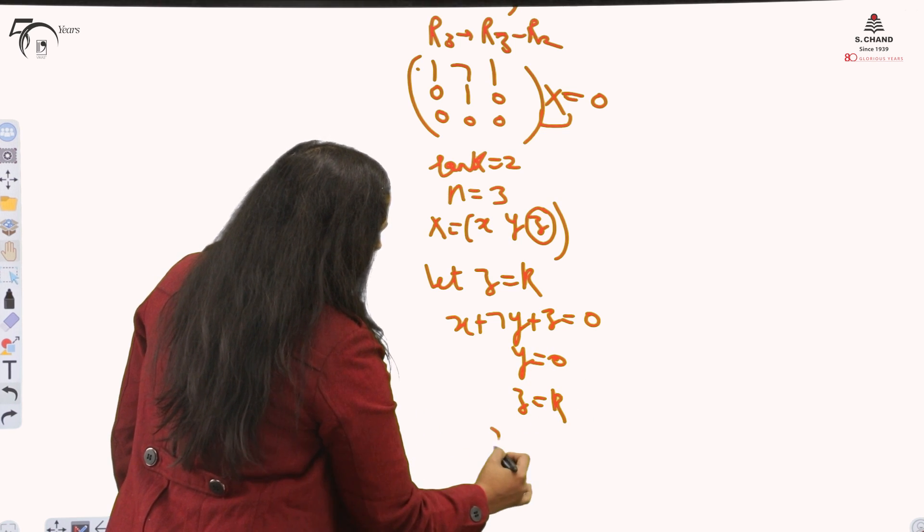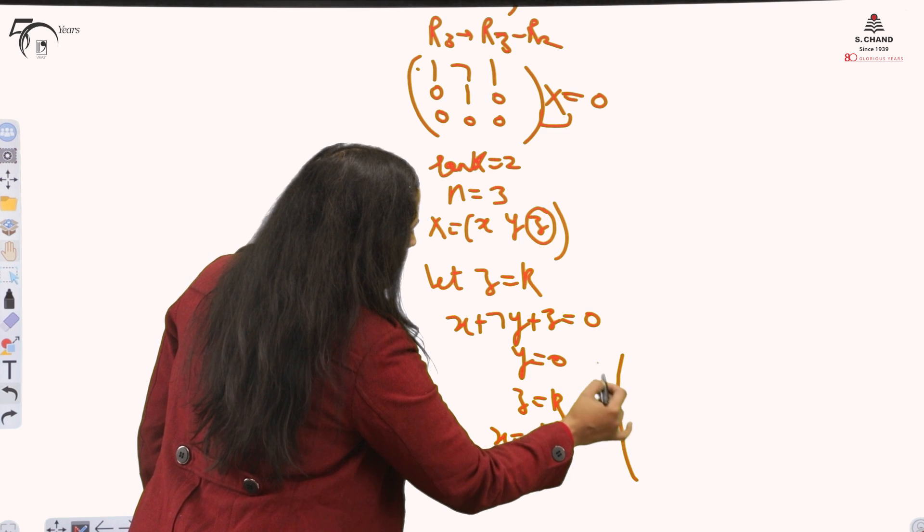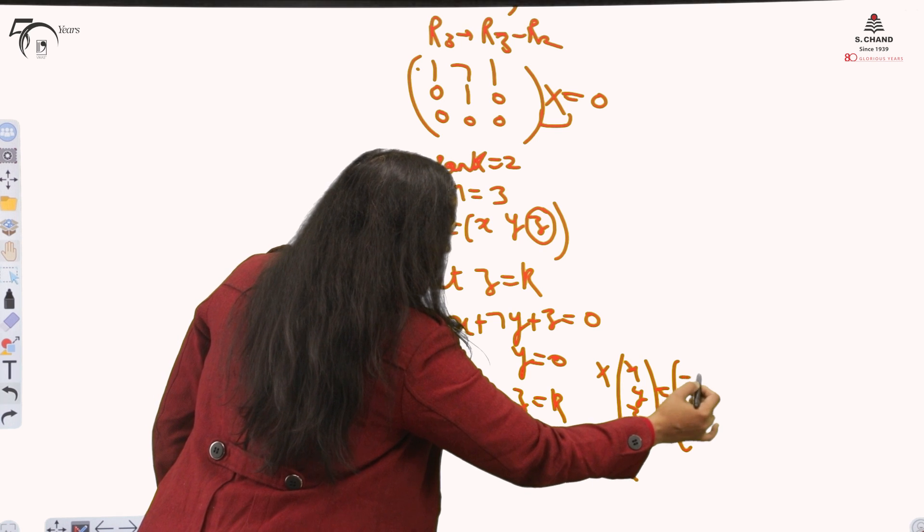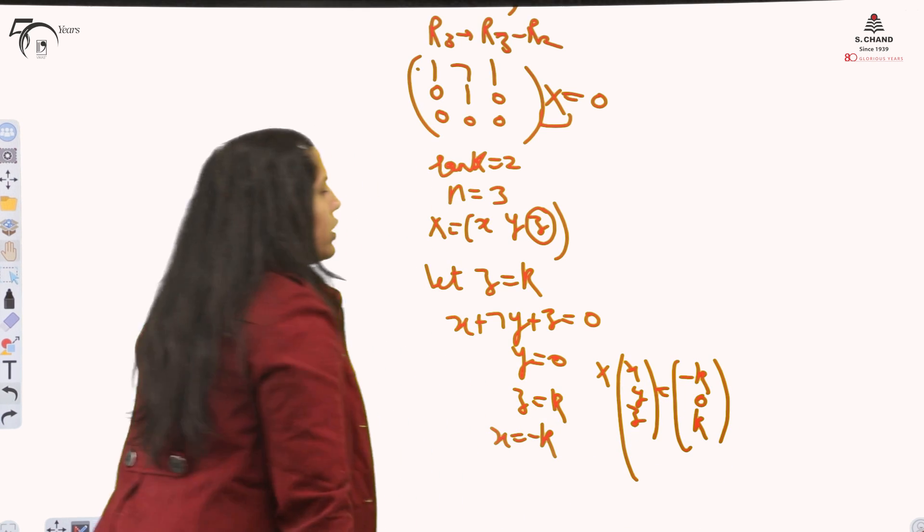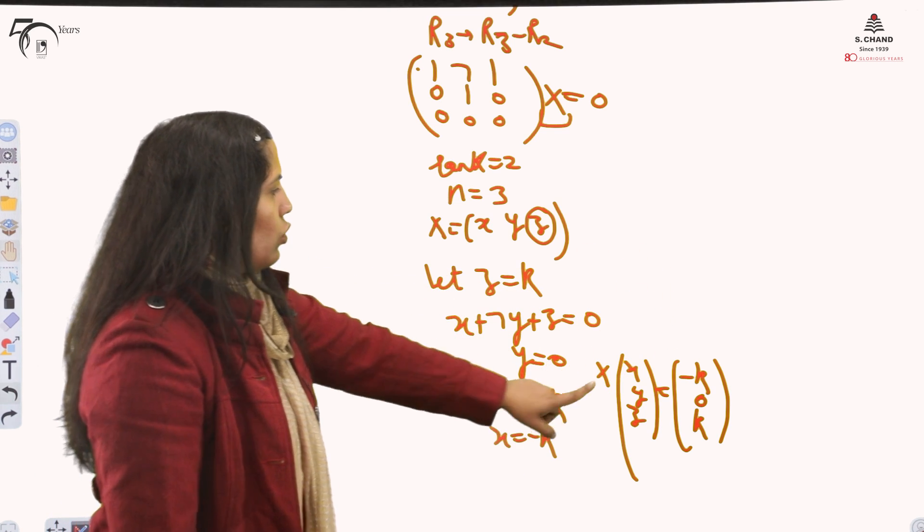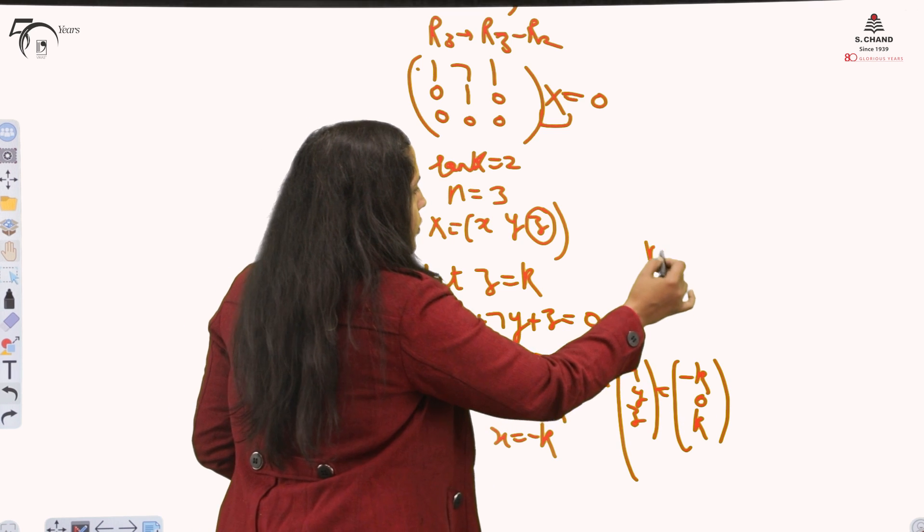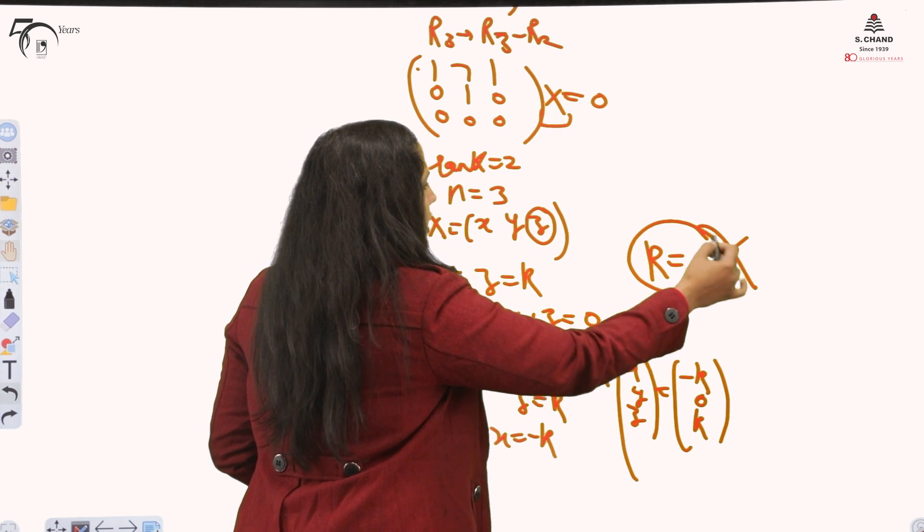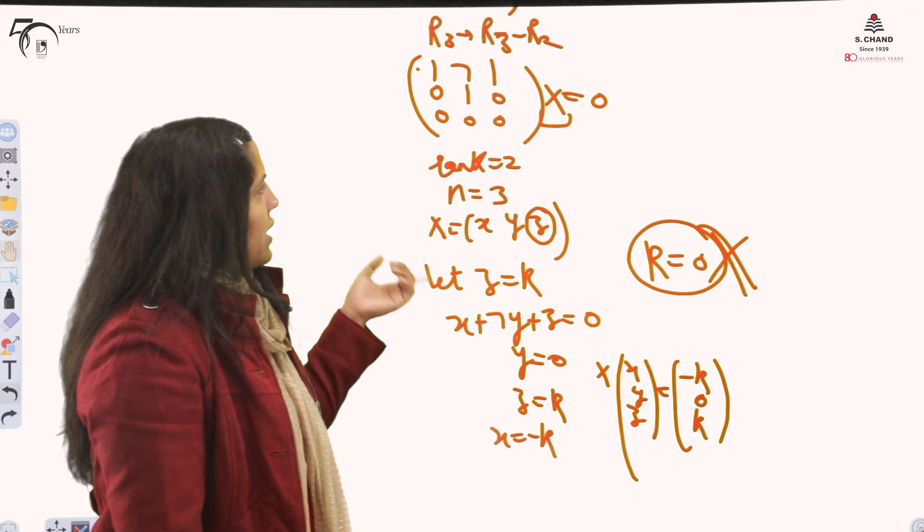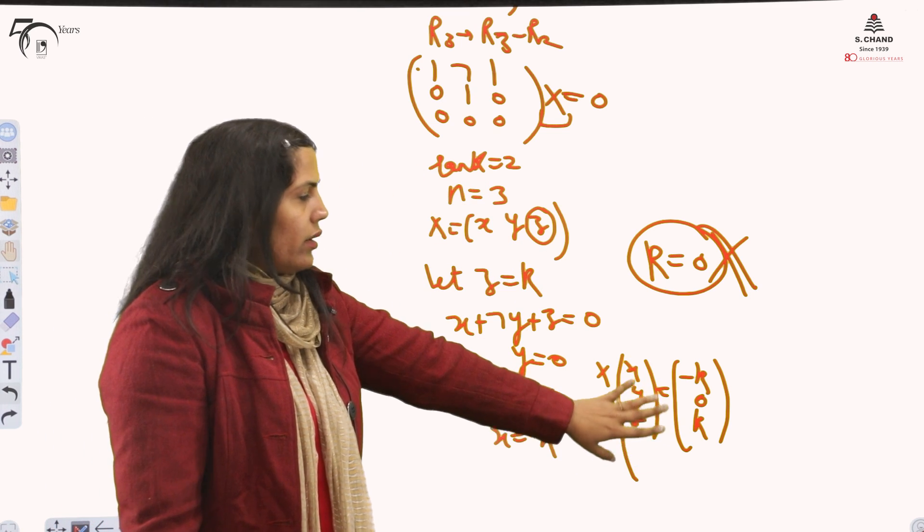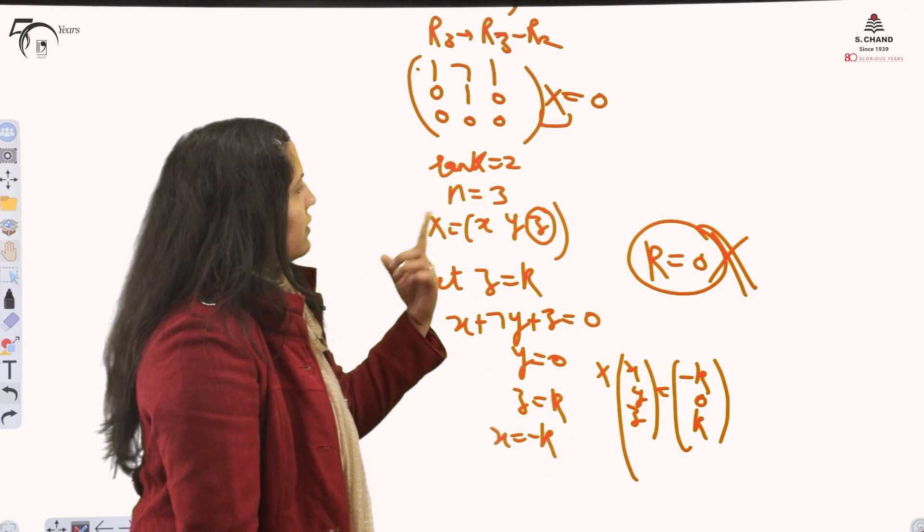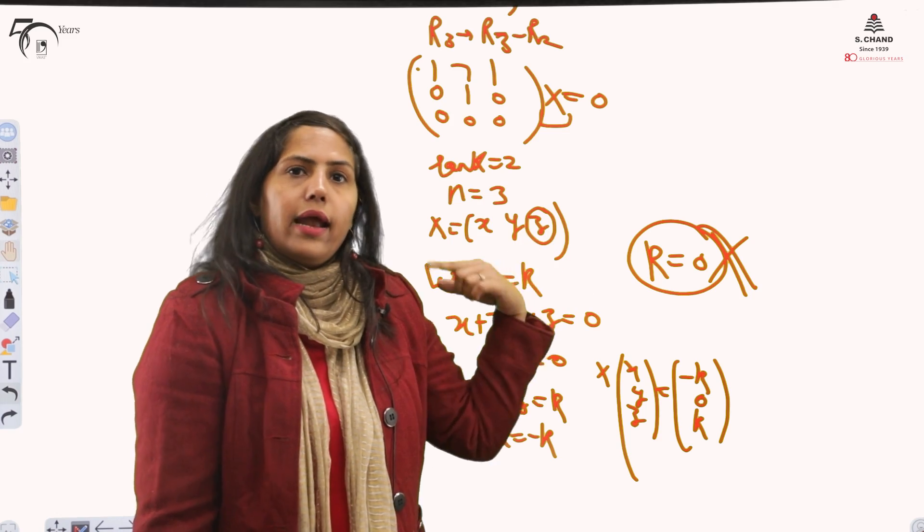This will give me x plus 7y plus z equal to 0, and from here y is 0 and z is already k. So what will be x? It will be minus k. So I got my vector x as x, y, z and that is minus k, 0, k. If you will now keep putting k values 1, 0 - never put k as 0. Never put k equal 0, never ever in the case of eigenvectors. Any non-zero value you will put, you will get the vector. It means corresponding to lambda minus 2 there are infinitely many eigenvectors. This is how you find the eigenvectors and the same way you can do it for lambda 3 and lambda equal to 6.